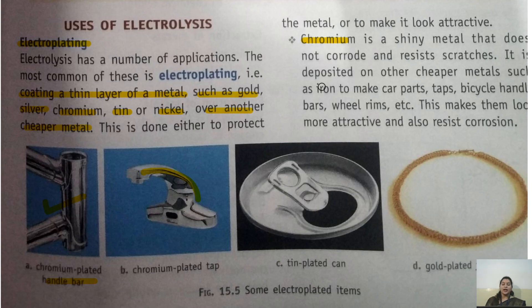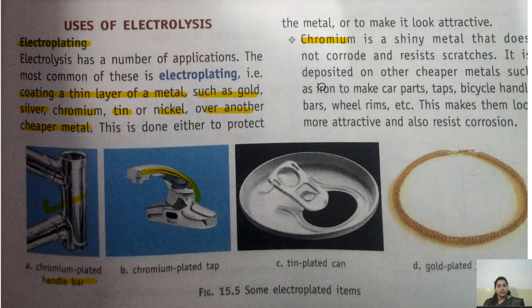Why is electroplating done? There are two basic reasons. First, to protect the metal — we coat another metal over it for protection. Second, to make it more shiny and attractive. Third, some metals like iron react easily with other substances, so we coat them to prevent reaction.